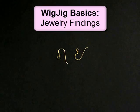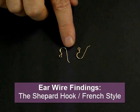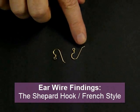In this video, we're going to talk about the various findings that are used when making jewelry. The first finding we'll discuss is the ear wire finding, and this is the shepherd hook type or French style of ear wire.